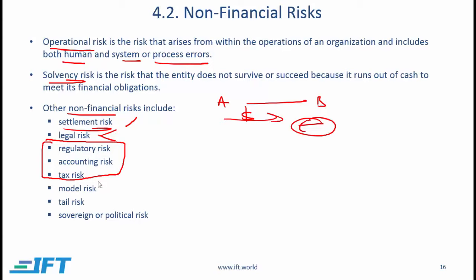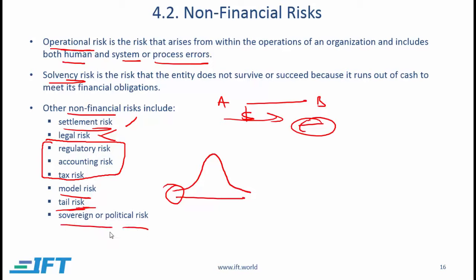Model risk refers to the risk that a company using a valuation model has mistakes or issues with that model. Tail risk relates to the fact that asset returns are often modeled as normal distributions; the probability of extreme losses based on a normal distribution may be much lower than what it actually is. Finally, sovereign or political risk is the risk that asset values go down because of government-related or political problems — for example, Greek government bonds declining substantially due to the euro crisis.